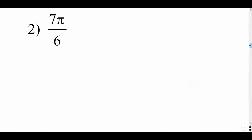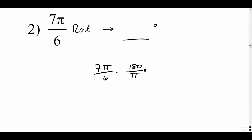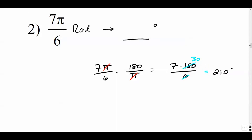Example two: converting 7pi/6 radians to degrees. Multiply by 180 over pi — the pi's cancel nicely. We're left with 7 times 180 over 6. Rather than multiplying first, simplify: 6 goes into 180 thirty times, so this becomes 7 times 30, which equals 210 degrees.